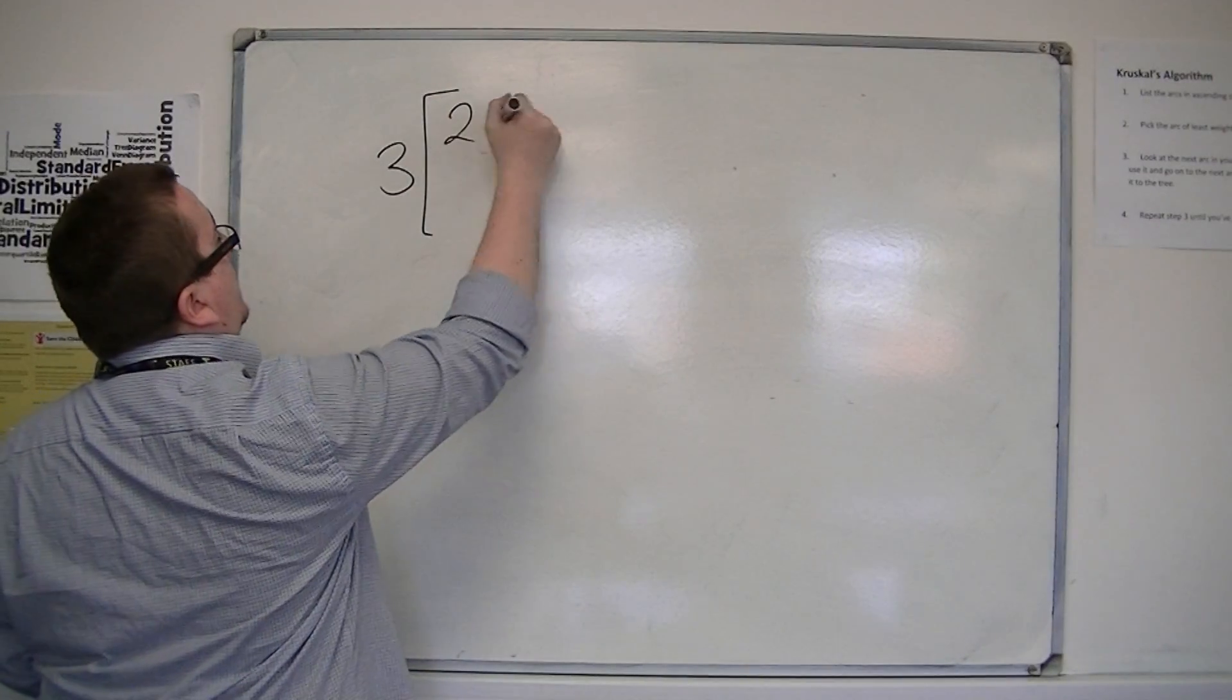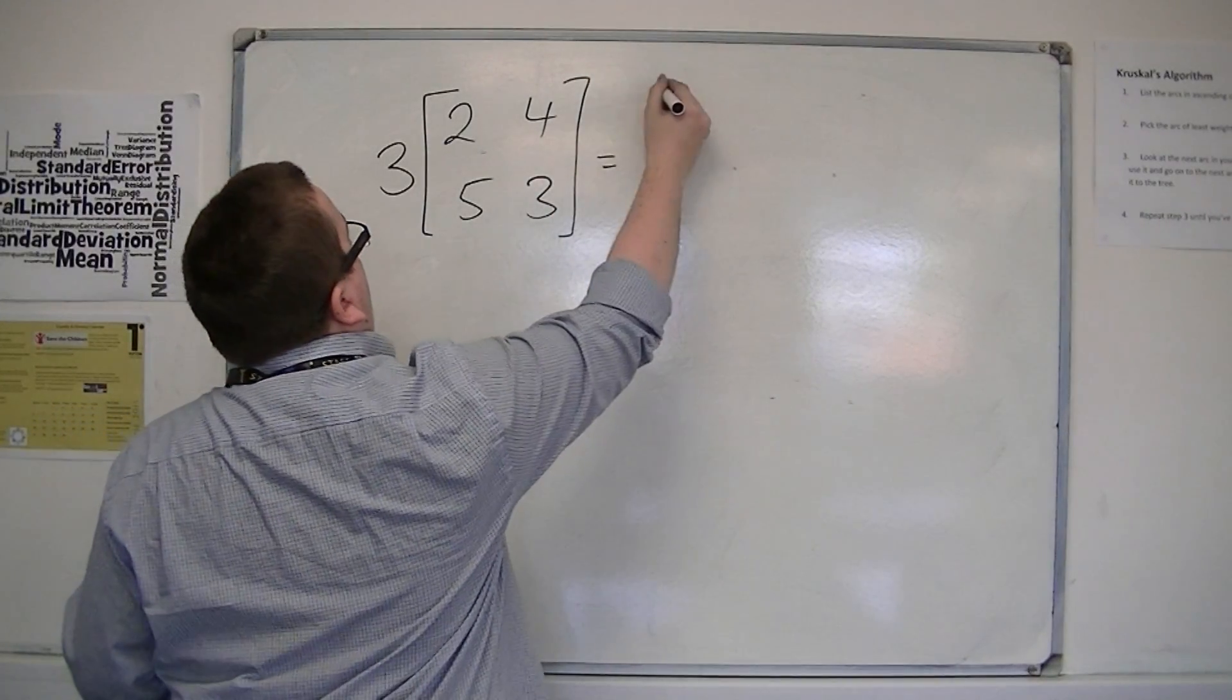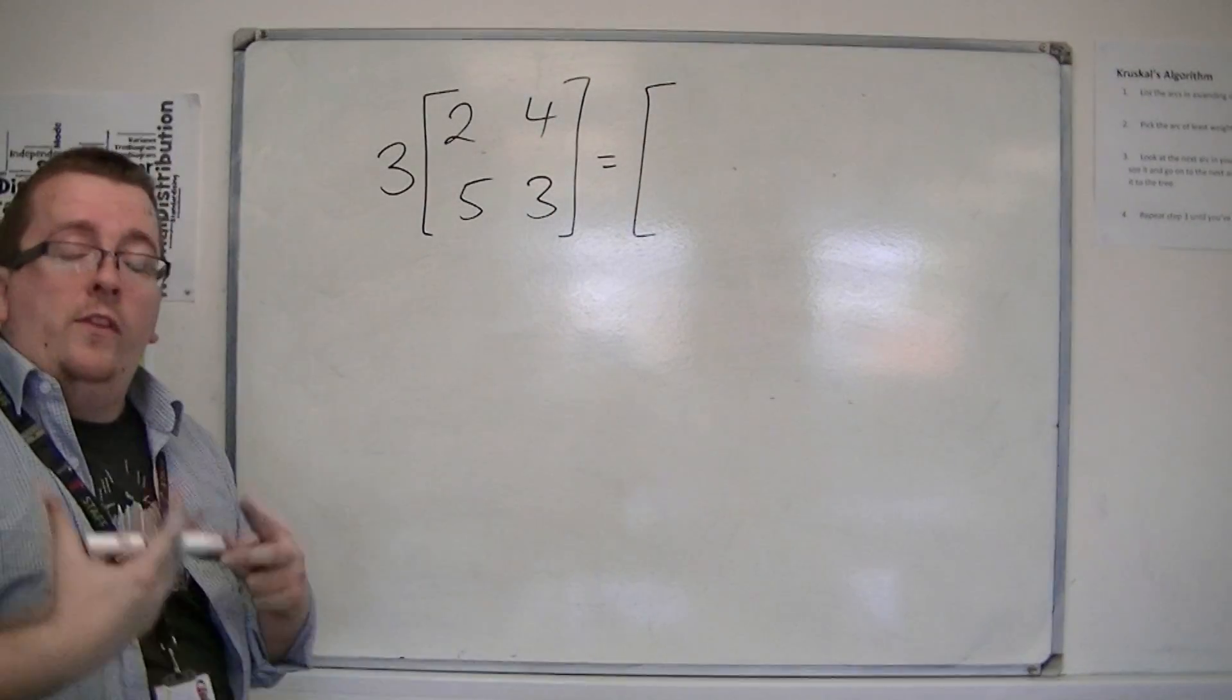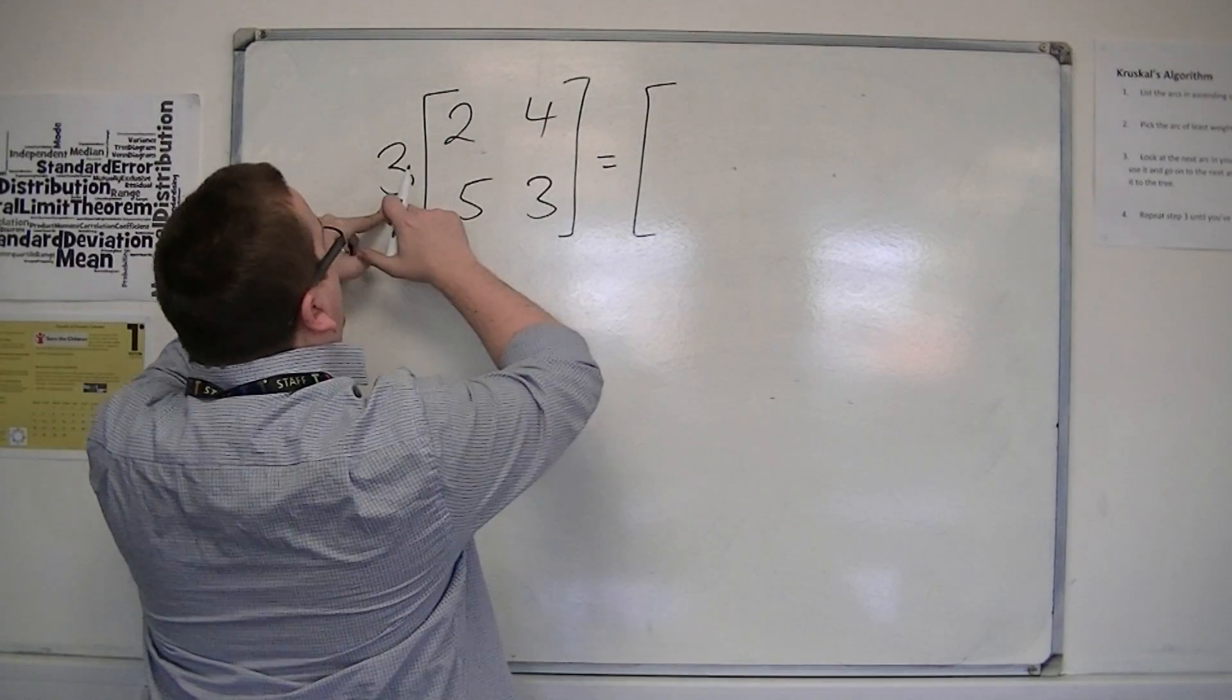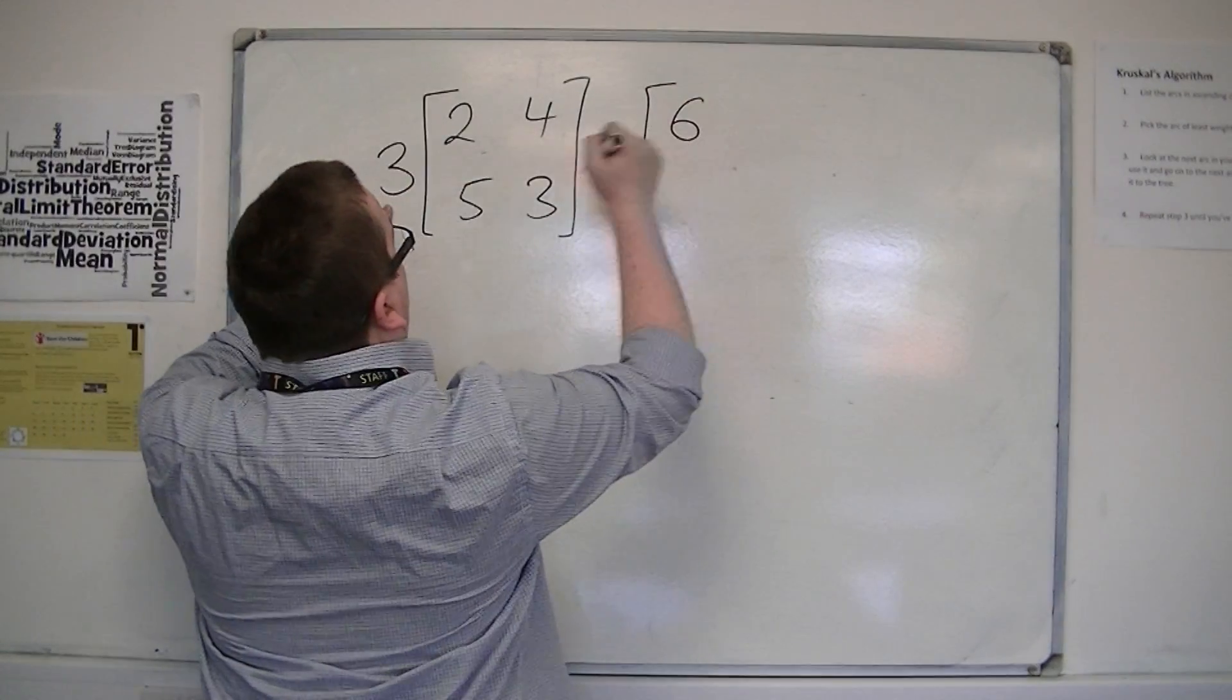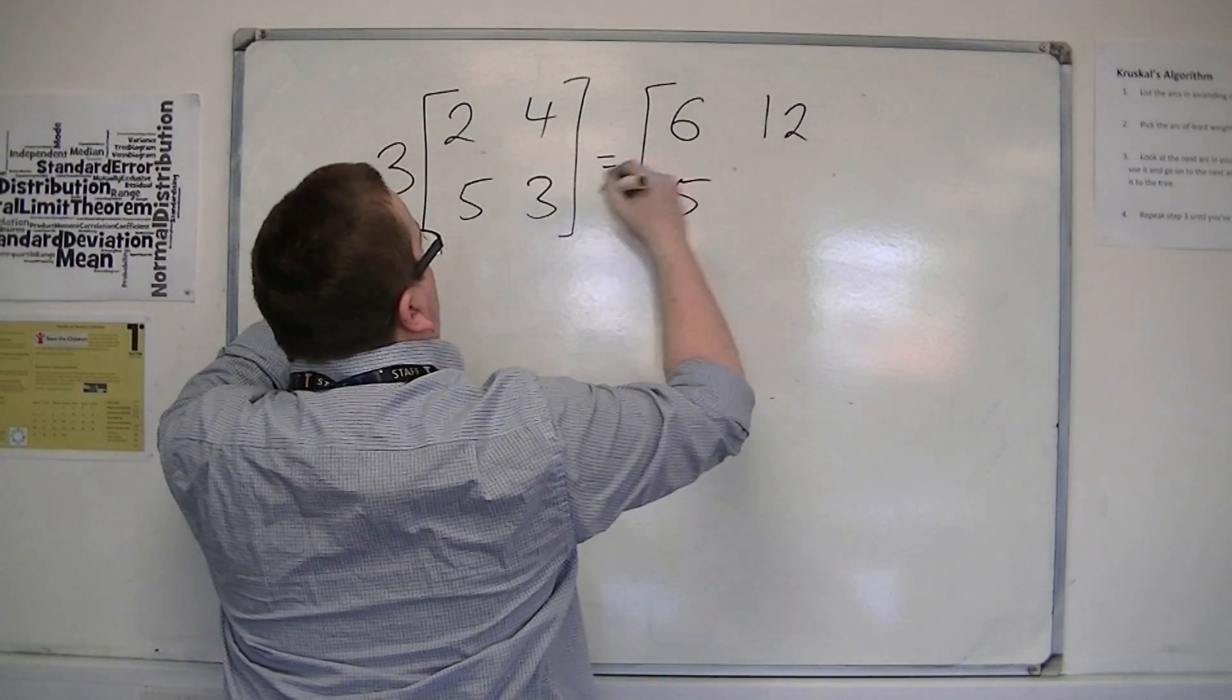so if I multiply a matrix like this by 3, then this works in that the 3 applies to each element in the matrix. So 3 lots of 2, 3 lots of 5, 3 lots of 4, and 3 lots of 3.